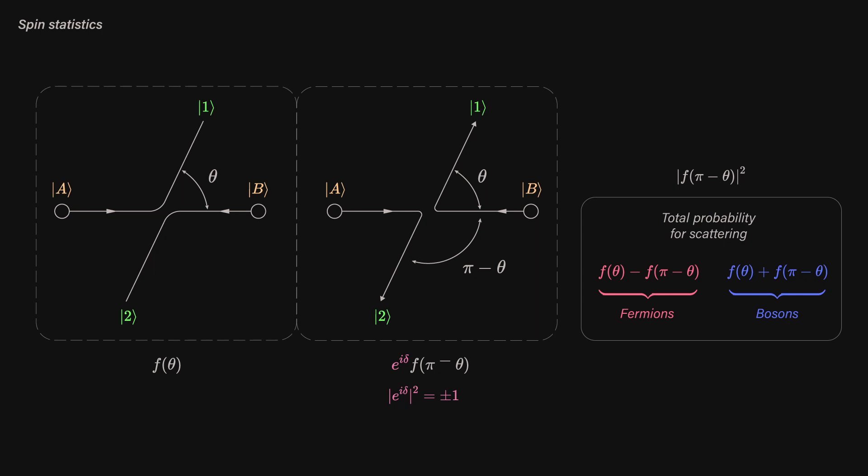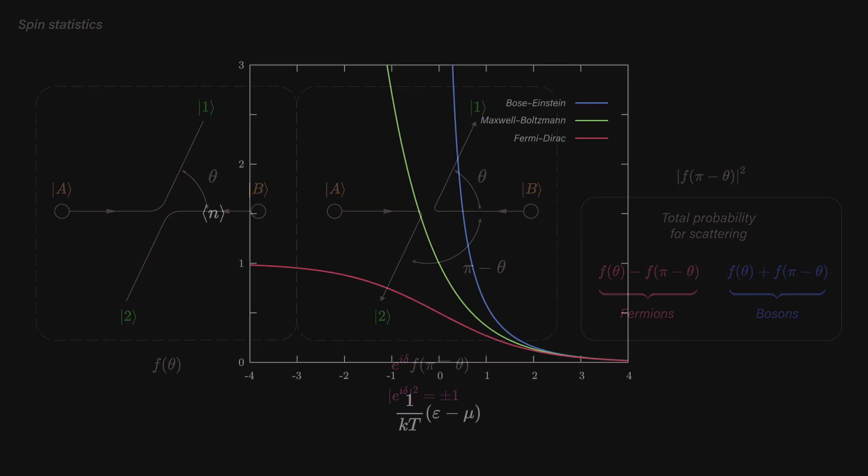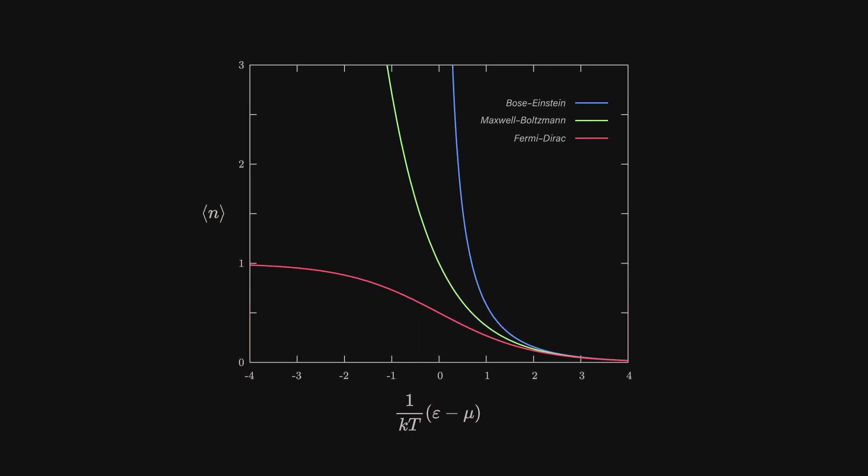In the same way as before, if the phase here squares to 1, we'll have the total amplitude of the scattering process be the sum of the original process f(theta) and the new process f(π-theta). In other words, the probabilities for the two events contribute to each other, making this more likely. However, were the phase squared -1, the probabilities would cancel out each other, diminishing the total chance of it happening.